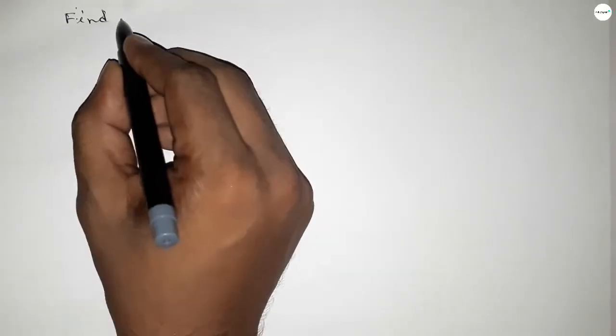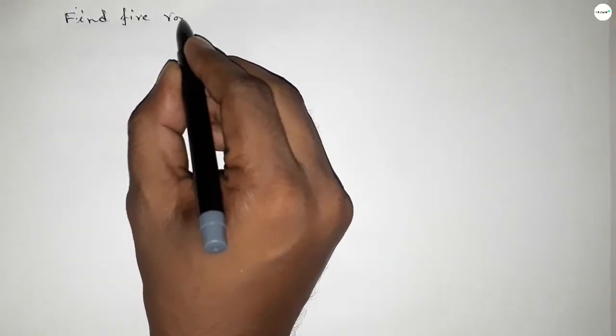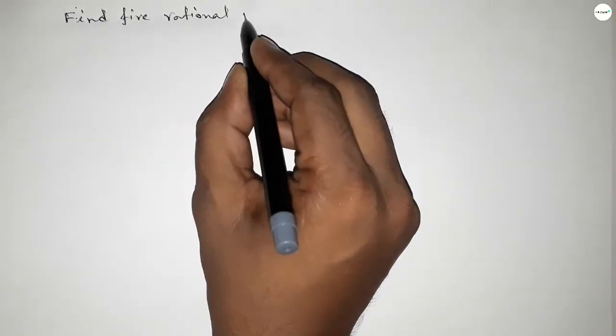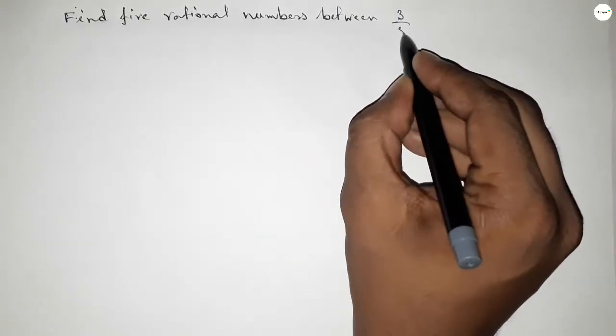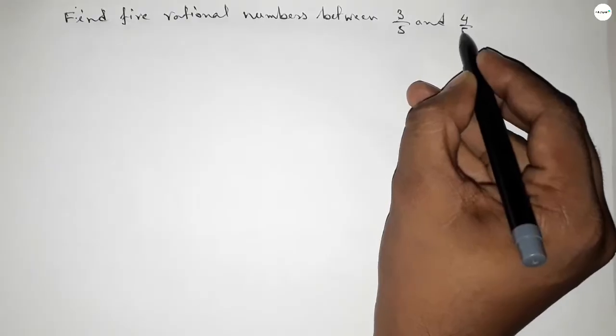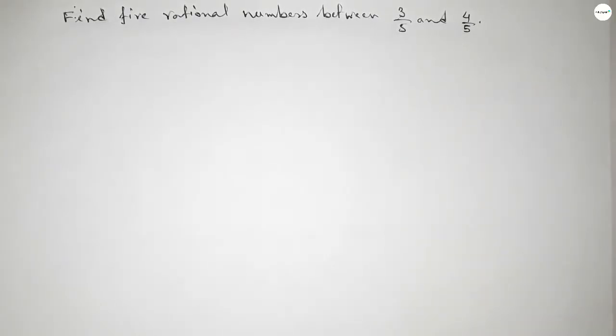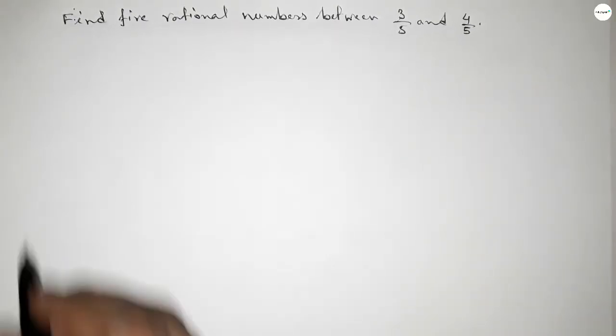Hi everyone, welcome to SHR classes. Today in this video we have to find 5 rational numbers between 3 over 5 and 4 over 5. Finding 5 rational numbers between 3 over 5 and 4 over 5, so let's start the video.